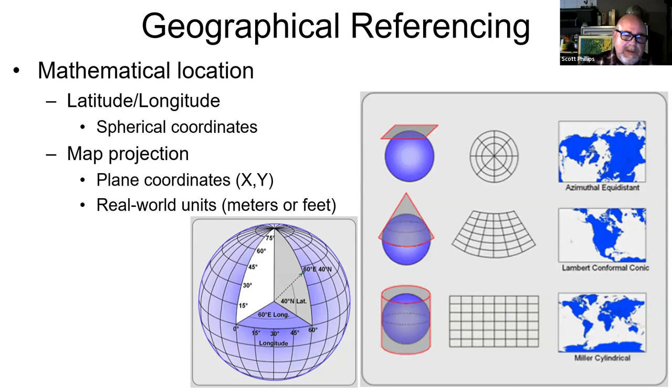We talked about this a bit in the introduction - the absolute location of things, mathematically locating features. How do we mathematically locate features? We do this either using latitude and longitude, which are spherical coordinates for the whole earth, or we project those to a map projection.